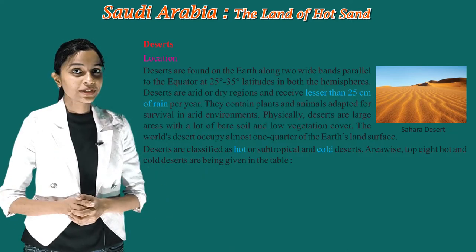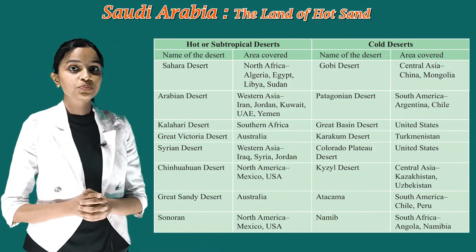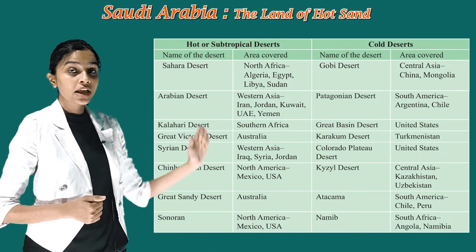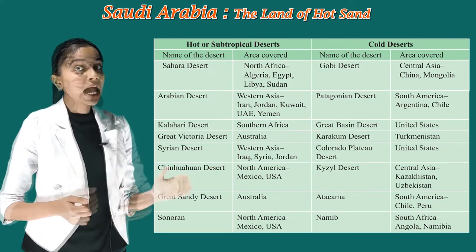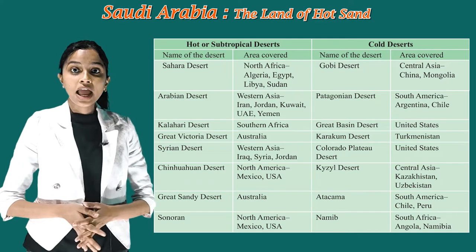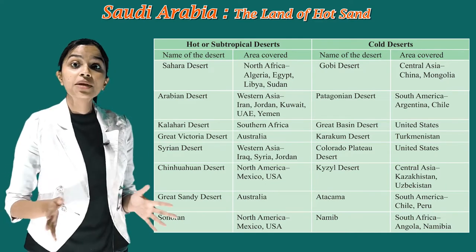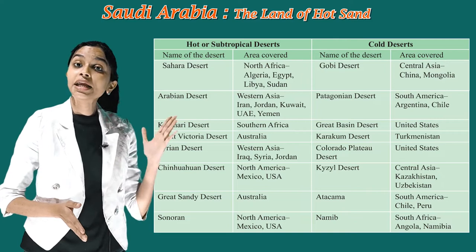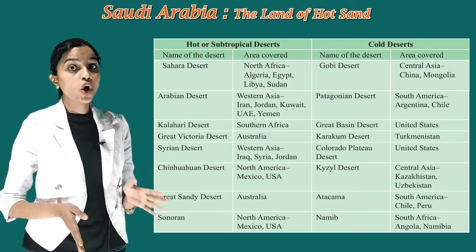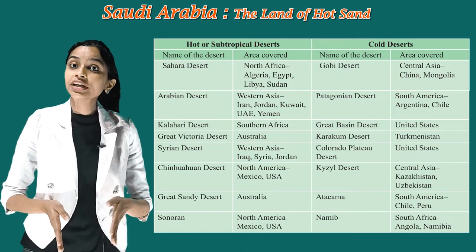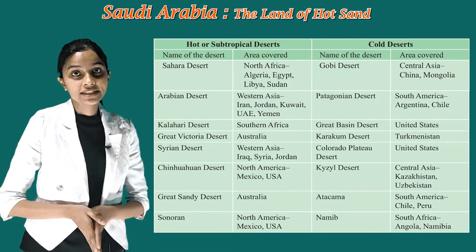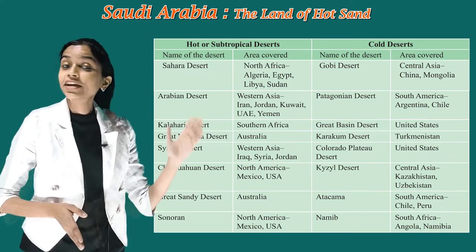Now children, see the table of hot or subtropical deserts with their names and area covered. Sahara Desert is in North Africa — Algeria, Egypt, Libya, and Sudan. The next one is the Arabian Desert, in Western Asia — Iran, Jordan, Kuwait, UAE, and Yemen. The next one is the Kalahari Desert, in Southern Africa.